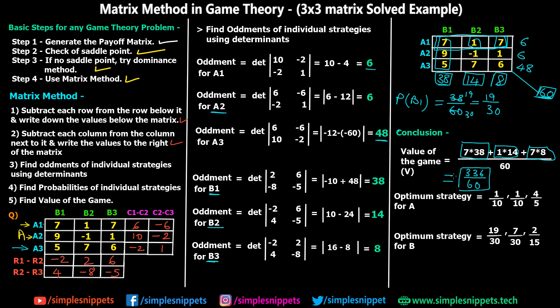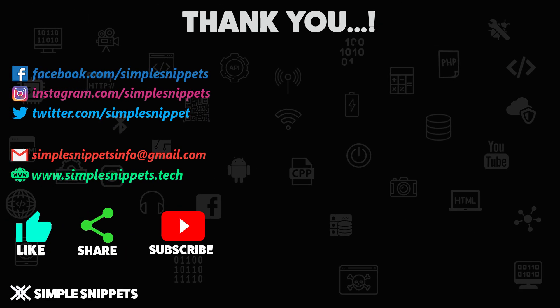So that was the matrix method. It seems a bit lengthy but you simply find R1−R2 and R2−R3, then C1−C2 and C2−C3, then find individual oddments. Write the oddments beside the matrix, calculate individual probabilities to get the optimum strategies, and lastly calculate the value of the game. That's it for this video on the matrix method for a 3×3 matrix. Hope you understood — give it a thumbs up, share it, and let me know in the comments. See you in the next video!